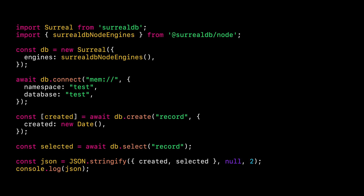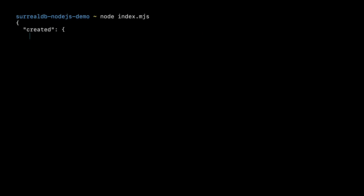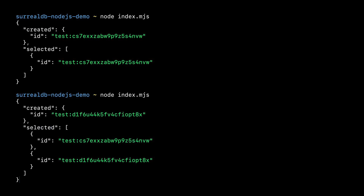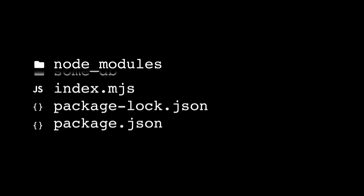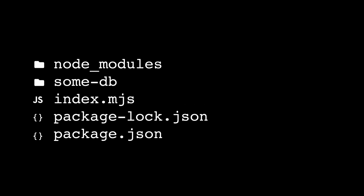To persist our data across application restarts, let's change the connection URL from mem to SurrealKV and specify a folder for SurrealKV to store its files in. Now, when we restart the application, you can see that all records are persisted across restarts, as our selected array keeps growing each time that we run the script. As expected, we now see a folder named sumdb inside of our project's files and folders.